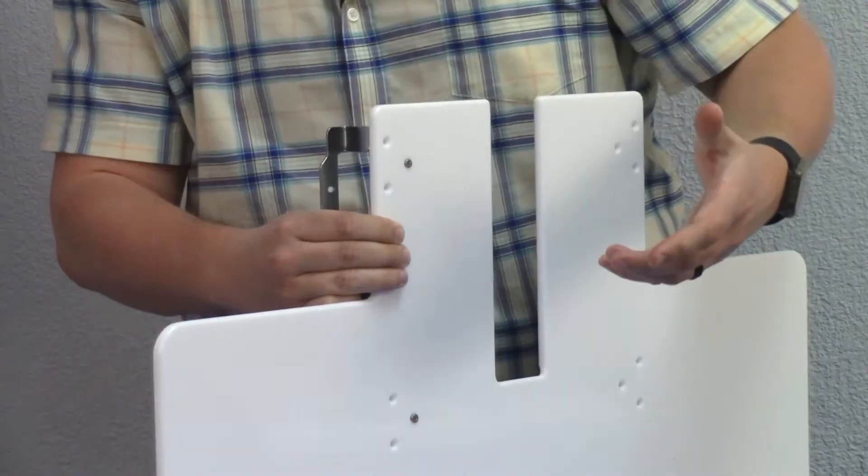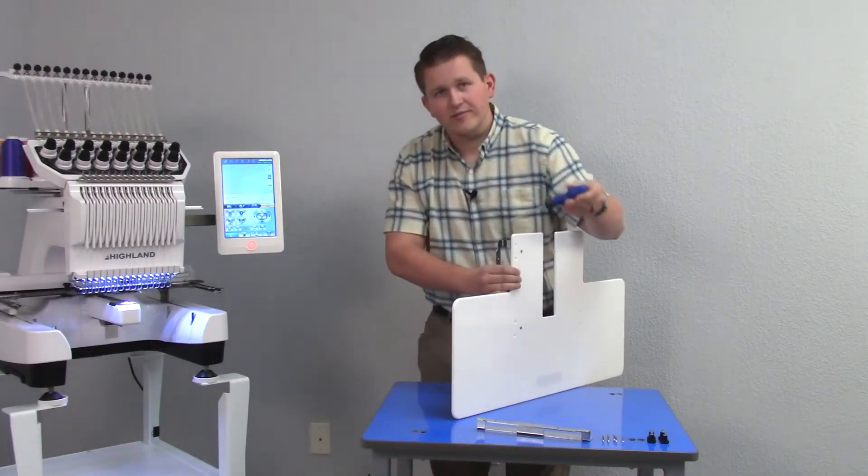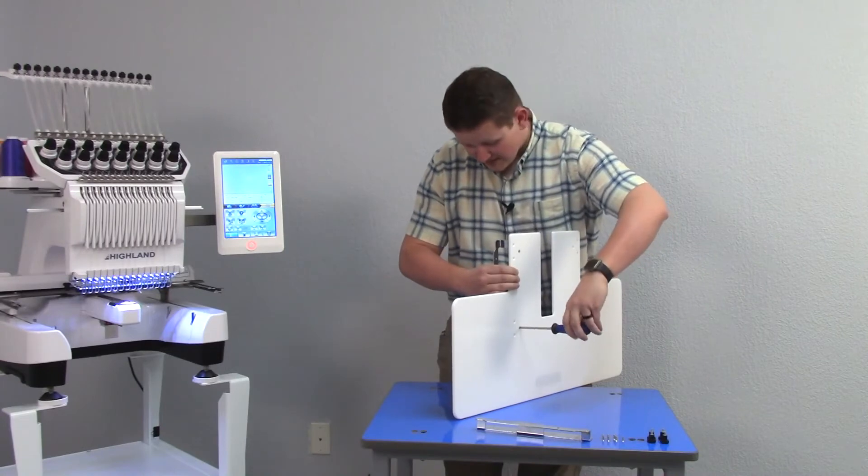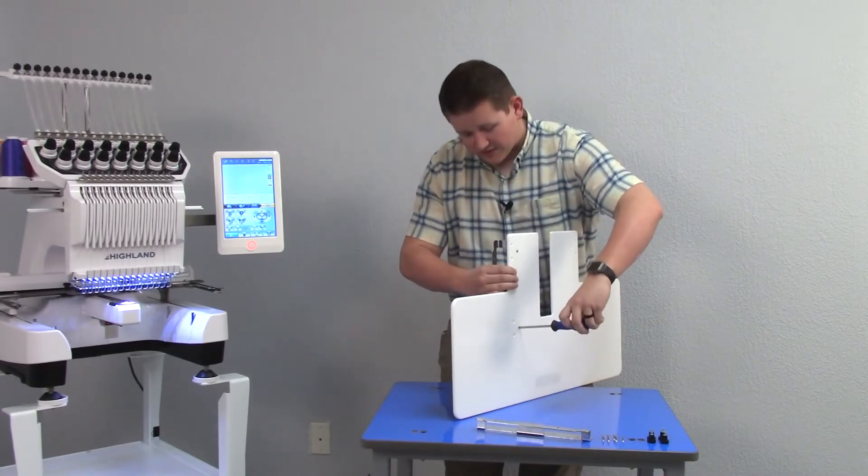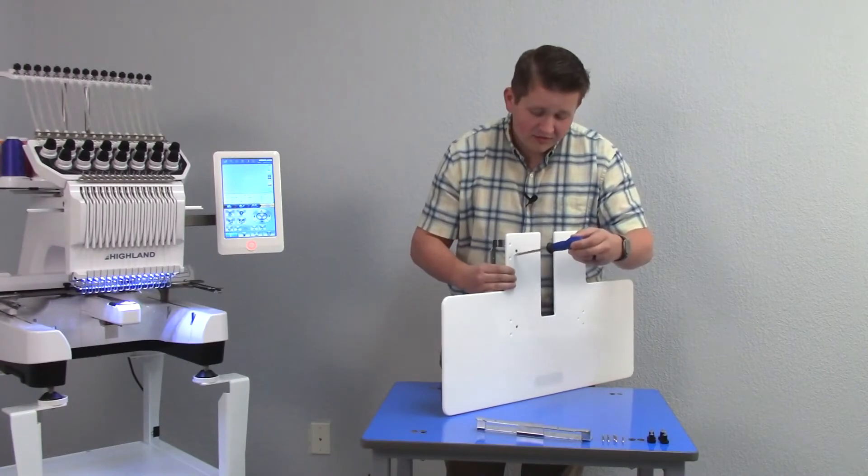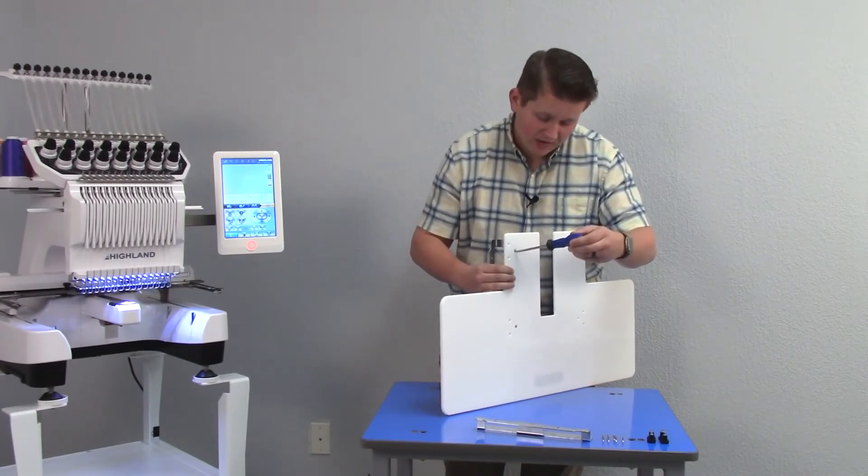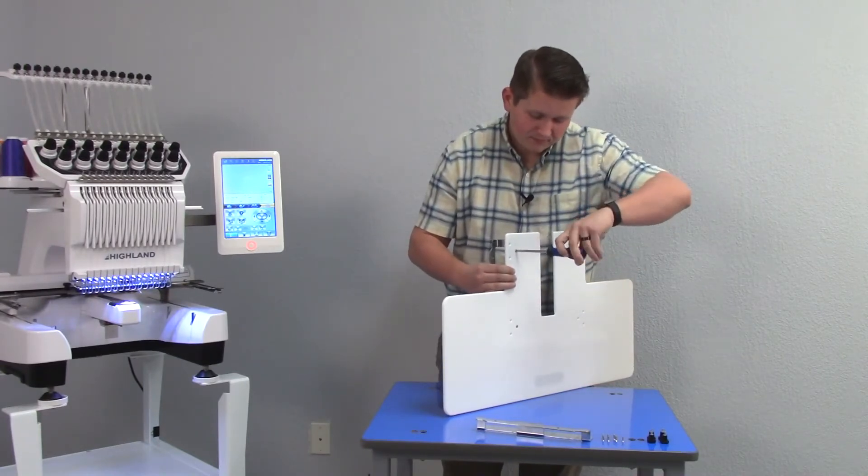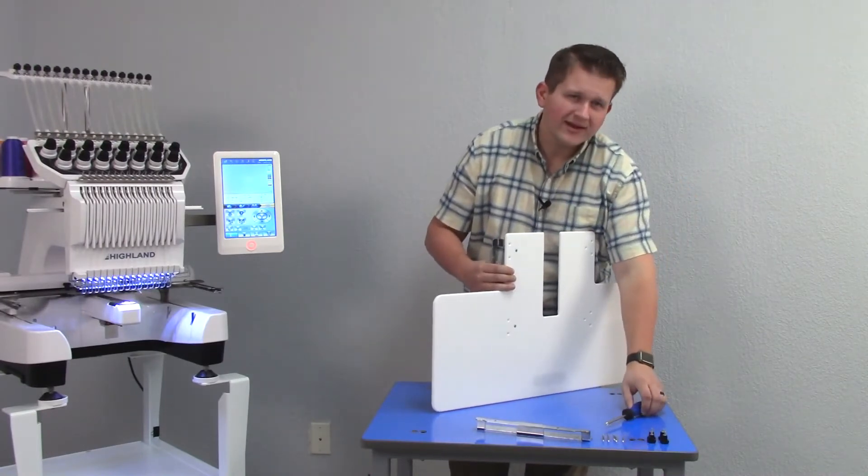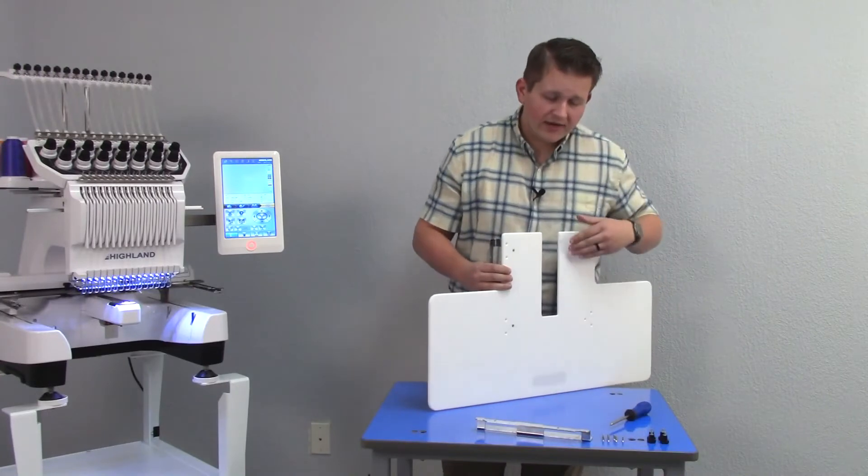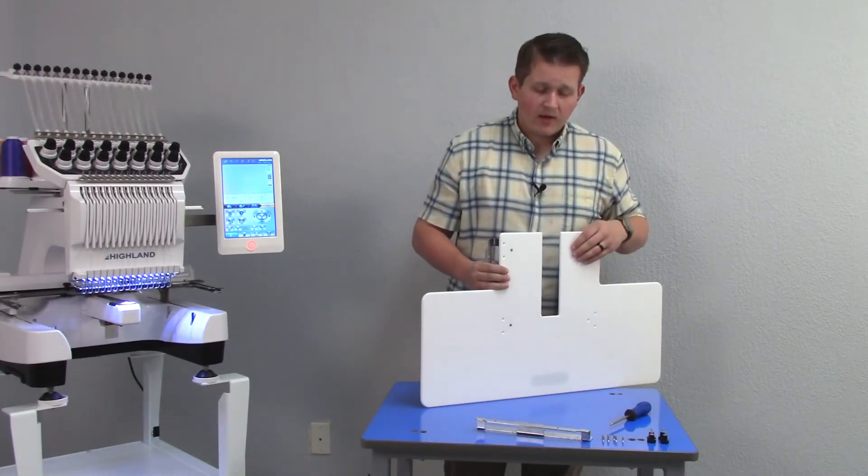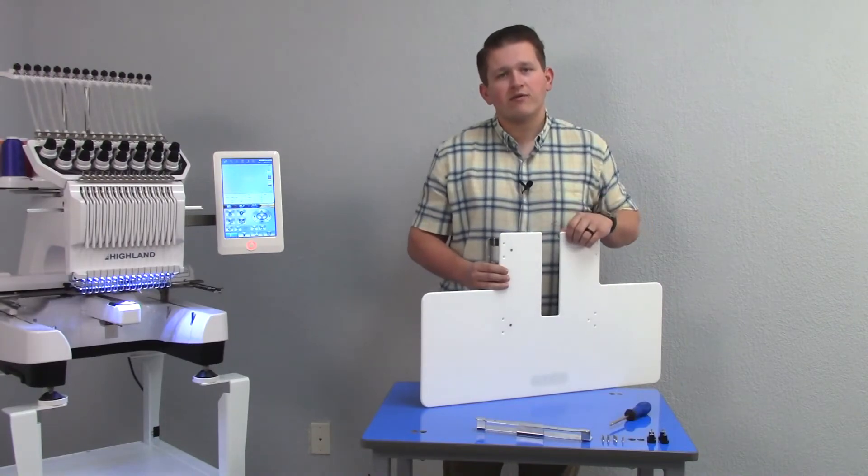Once I have both of those started, I can grab my Phillips head screwdriver and start tightening them down just a little bit. I don't need to snug them all the way just because I'm still having to screw in four other screws on this bracket. Now that I've got those a little snug, we're ready to continue screwing in the rest of this bracket and our other bracket. Once you do that, we're ready to move over to our machine.